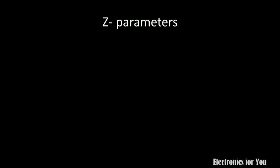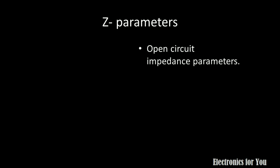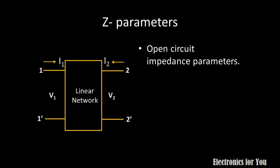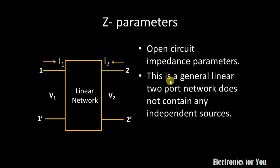Let us see the Z parameter. Z parameters are also known as open circuit impedance parameters. Let us consider one linear two-port network which has input voltage V1, input current I1, output voltage V2, and output current I2. This network does not contain any independent sources.